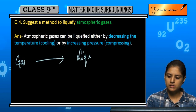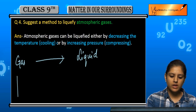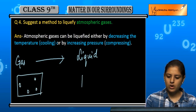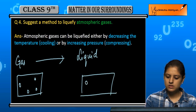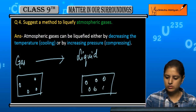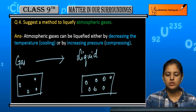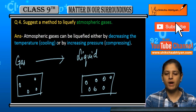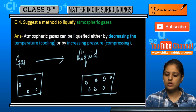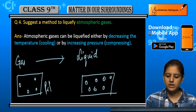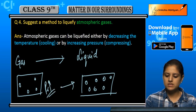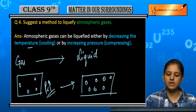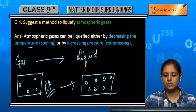Gas ke particles kuch aise hote hain aur liquid ke particles kuch aise hain. To change a gas to liquid, we need to bring the particles closer together. We can either increase the pressure so the particles come close, or reduce the temperature, which also causes the particles to come closer.